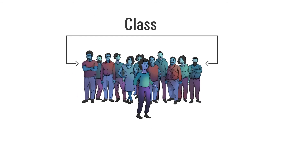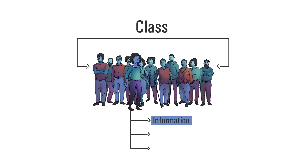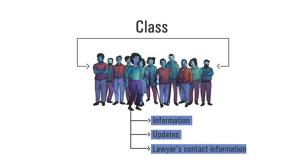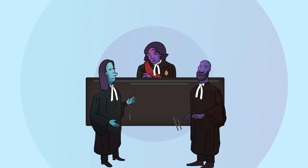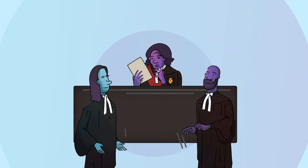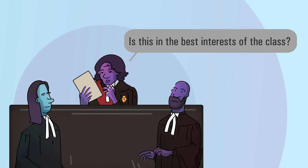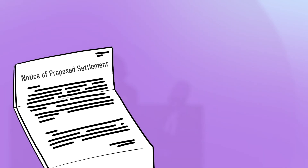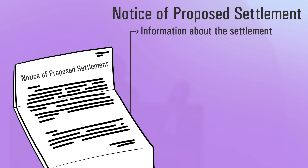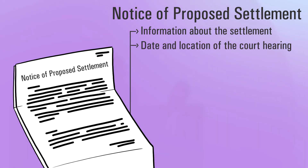If Anita does not opt out and stays in the action, she has a right to information about the class action. Updates on the status of a class action and the lawyer's contact information can usually be found on class counsel's website. If a settlement agreement is reached between the parties, a judge must look at it and decide whether it is in the best interests of the class. The judge issues a notice to class members to let them know a settlement has been proposed.